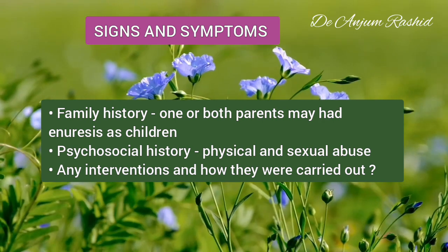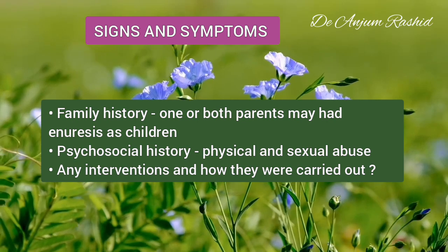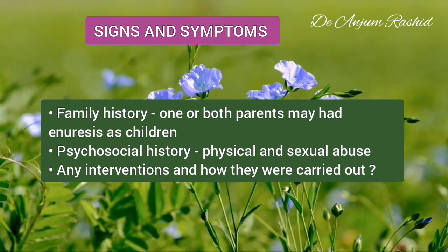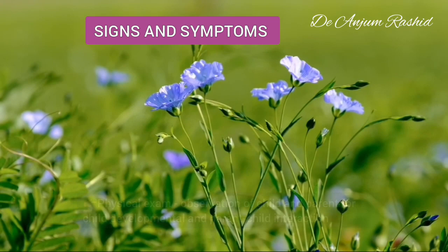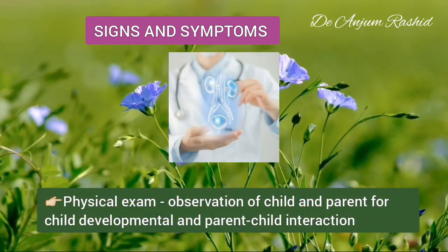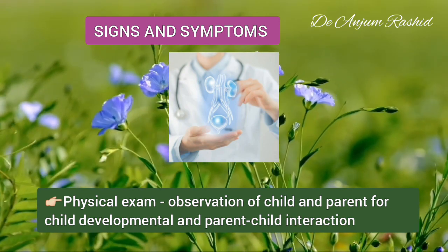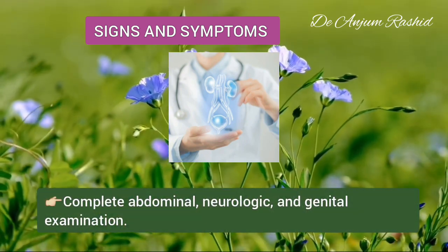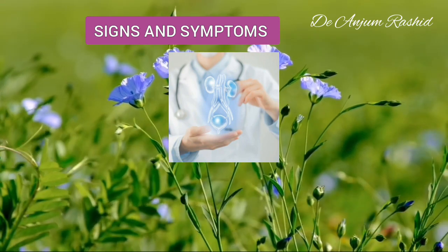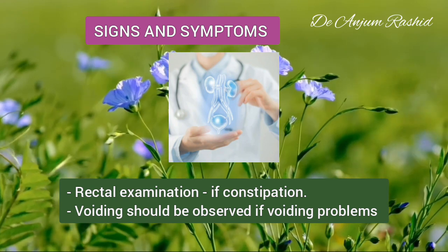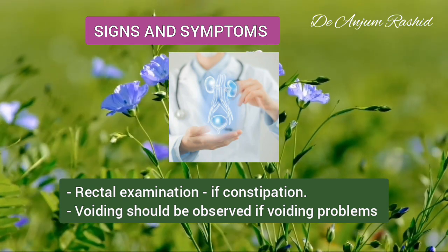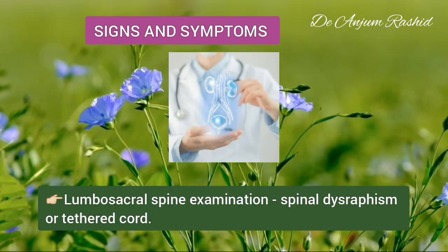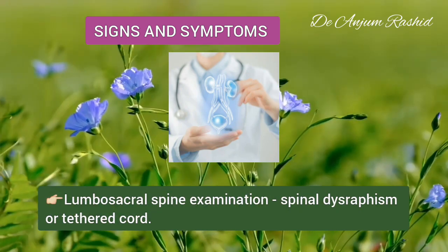Many families have tried numerous interventions before seeking a physician's help. Identifying these interventions and how they were carried out helps in understanding the child's condition and role within the family. The physical examination begins with observation of the child and the parent for clues about child development and parent-child interaction patterns. Special attention is paid to the abdominal, neurological, and genital examination. Rectal examination should be performed if the child has constipation. Voiding should be observed if a history of voiding problems such as hesitancy or dribbling is present.